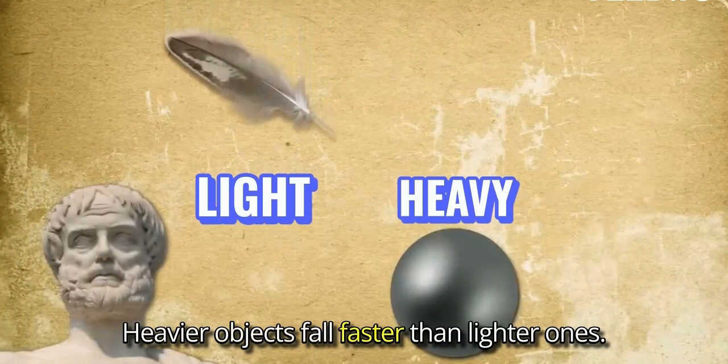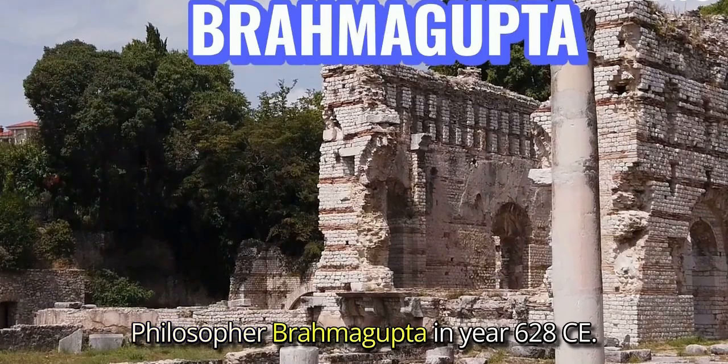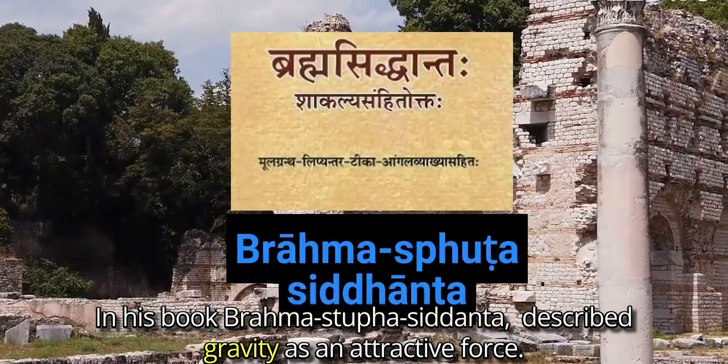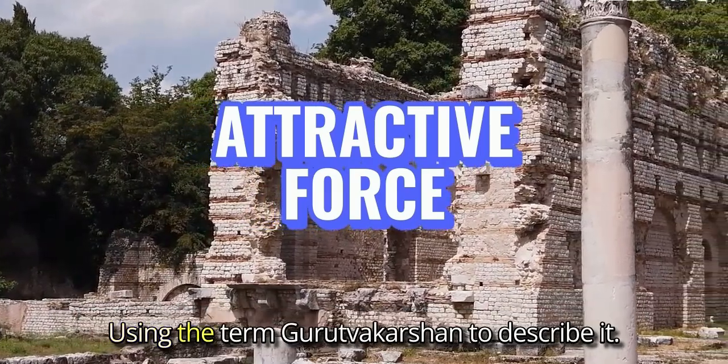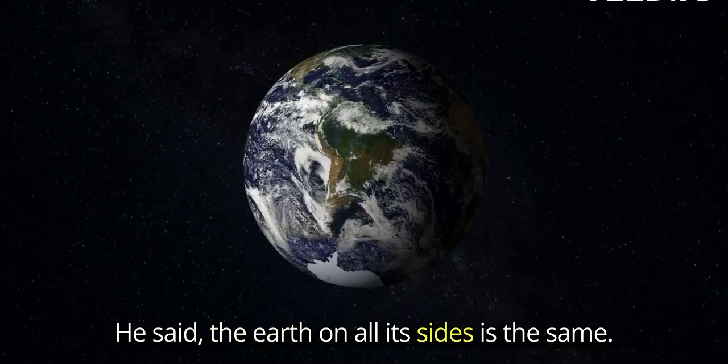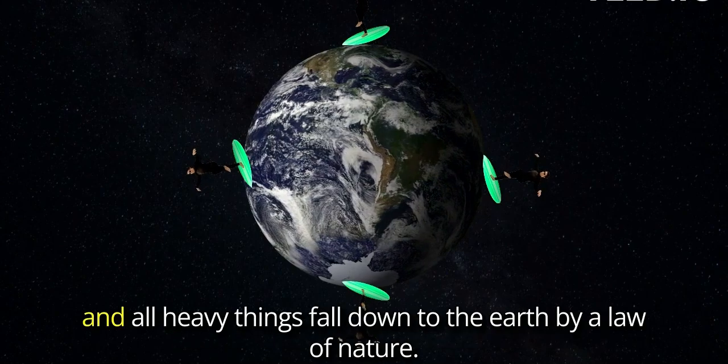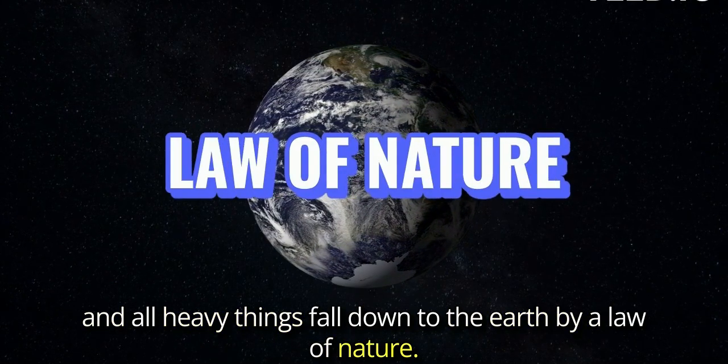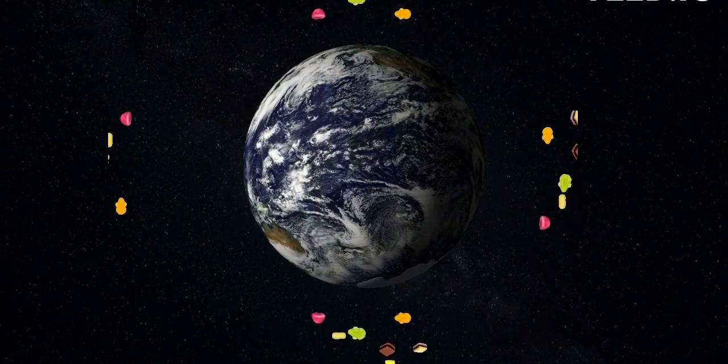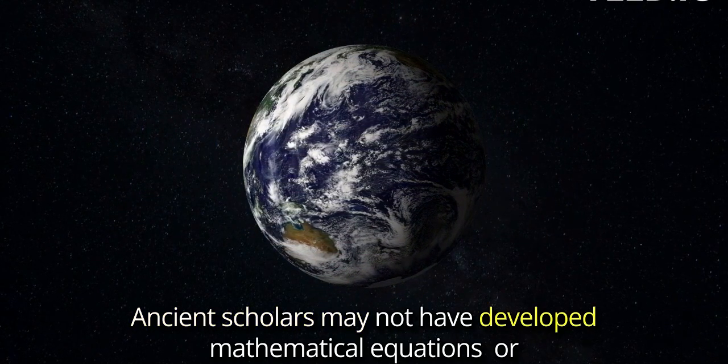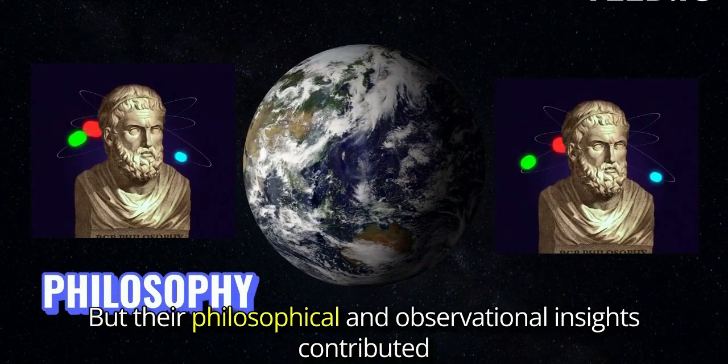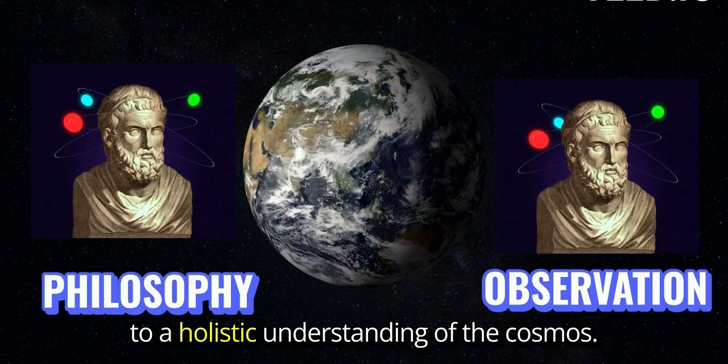Heavier objects fall faster than lighter ones. The philosopher Brahmagupta, in year 628 CE, in his book Brahmā-sphuṭa-siddhānta, described gravity as an attractive force, using the term gurutvākarṣaṇ to describe it. He said, the earth on all its sides is the same. All people on the earth stand upright, and all heavy things fall down to the earth by a law of nature. For it is the nature of the earth to attract and to keep things, as it is the nature of water to flow. Ancient scholars may not have developed mathematical equations or formalized theories of gravity like their modern counterparts. Their philosophical and observational insights contributed to a holistic understanding of the cosmos.